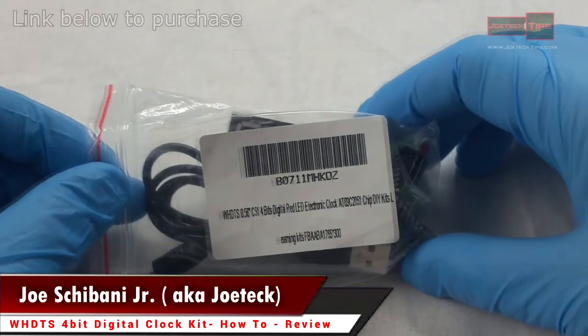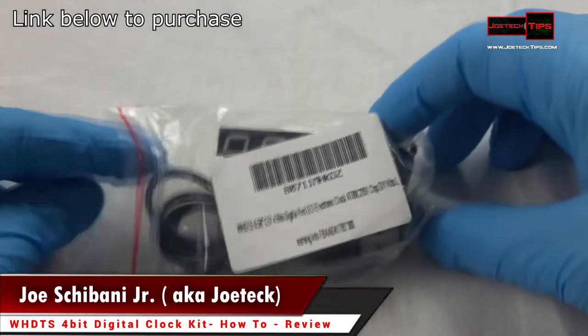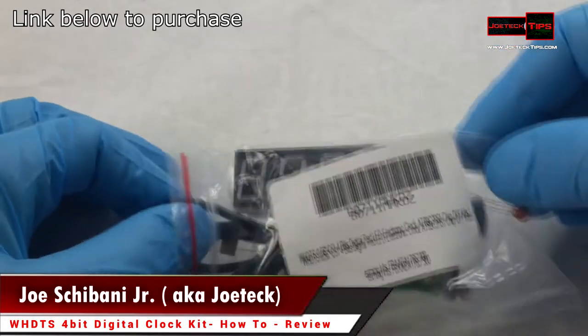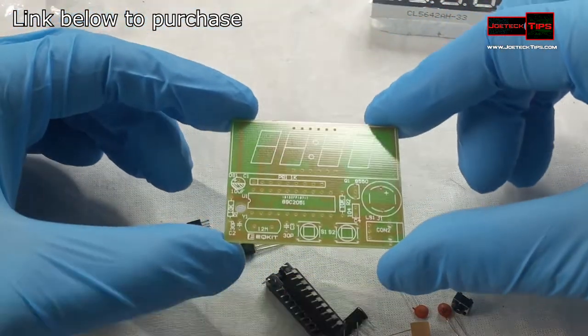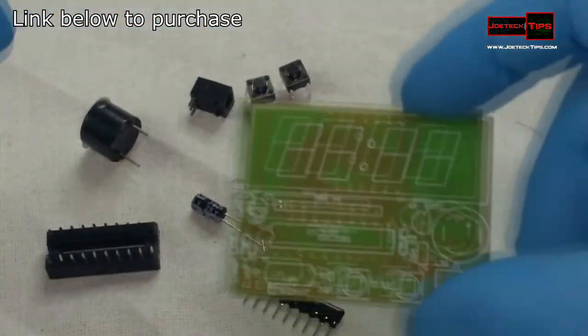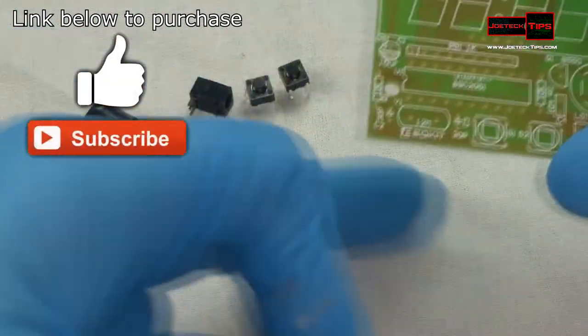Today we're going to learn how to build an electronic clock. I got this on Amazon, the link will be in the description. All right, so what we're going to do is actually put all the components on the board. These are all the parts, and if you're building this you should follow along.